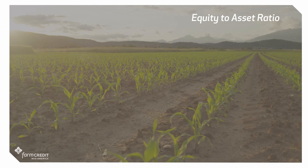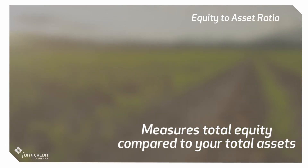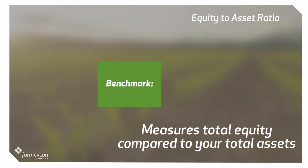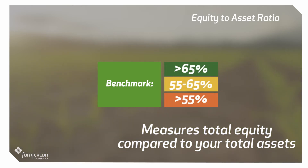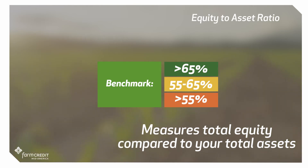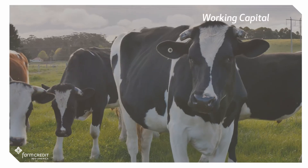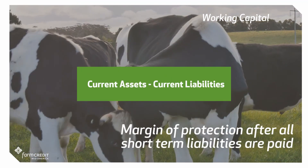The equity to asset ratio measures total equity compared to your total assets. This is commonly referred to as solvency. For a full-time grain farmer, a solvency above 55% is viewed as acceptable. These benchmarks vary depending on the operation. For example, a part-time farmer with 45% solvency would be adequate, and a farmer whose primary debt service payments service poultry or swine barns, 30% is an acceptable benchmark.